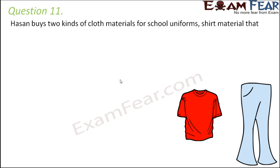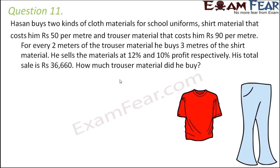Question number 11. Hasan buys two kinds of cloth materials for school uniforms: shirt material that costs Rs 50 per meter and trouser material that costs Rs 90 per meter. For every 2 meters of trouser material, he buys 3 meters of shirt material. He sells the materials at 12% and 10% profit respectively. His total sale is Rs 36,660. How much trouser material did he buy?